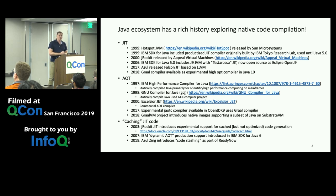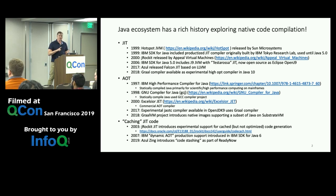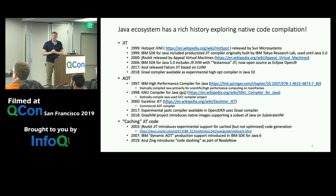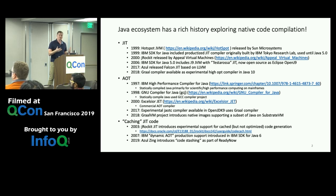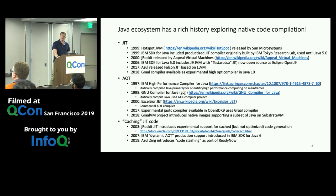The Java ecosystem is an amazing place to work on compilers. There's been a tremendous investment over more than 20 years in the Java ecosystem looking at JIT compilers, AOT compilers, and JIT compilers that can cache their code and load it later. There are a lot of major projects that have been looking at compilation over the years, and hundreds of graduate students have gotten degrees looking at compilation in the Java ecosystem.